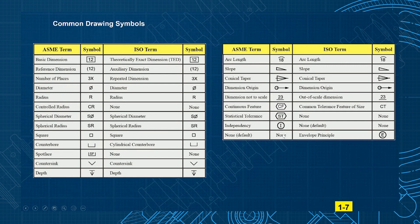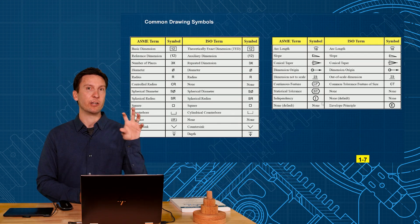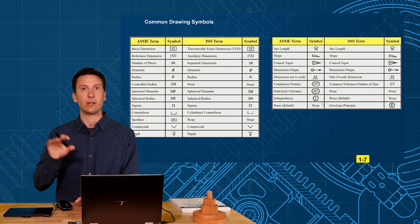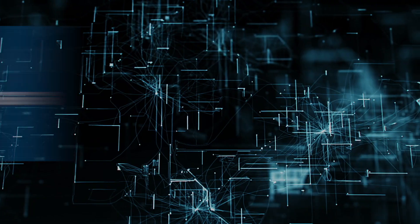In the next video, I want to go into a bit more on independency, which we have in ASME but ISO doesn't, and the envelope principle symbol, which ISO has but we don't. So the next video will explain why ASME has an independency symbol and why the ISO standard has an envelope principle symbol.